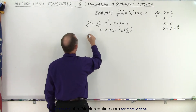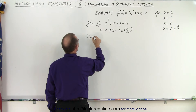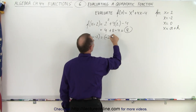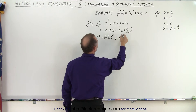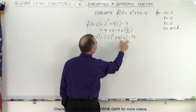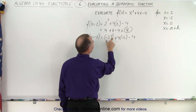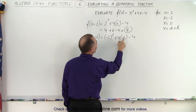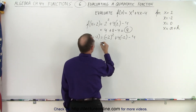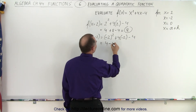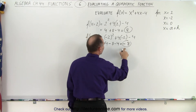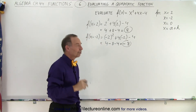Now let's do it for negative 2. f when x equals negative 2 is equal to negative 2 squared plus 4 times negative 2 minus 4. Notice I like to put parentheses around it so you can see that I've replaced the x by minus 2 and the x by minus 2. This is equal to a positive 4 minus 8 minus 4, which is minus 8. So that's the function when x equals negative 2.